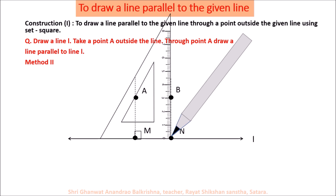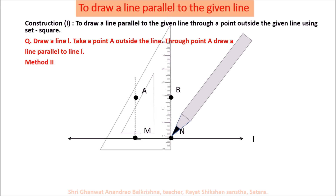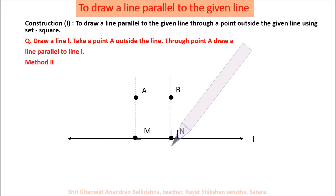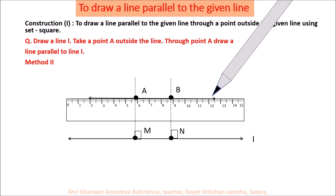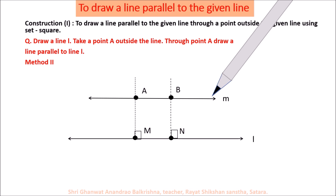Take point B on the perpendicular through N such that MA equals NB. Use the ruler to draw a line passing through points A and B. Name this line M. We can say that line M passing through point A is parallel to line L.